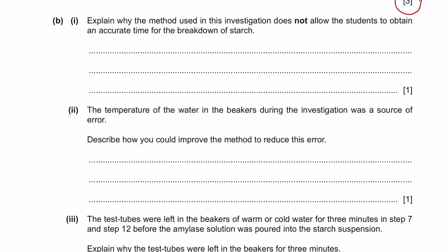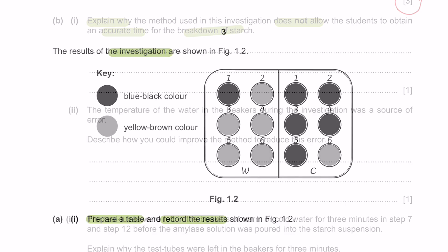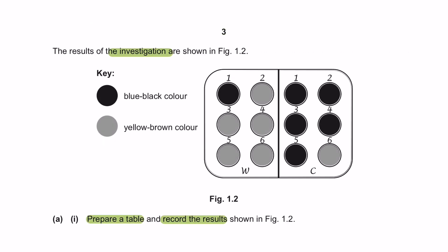Question B, Part 1, explain why the method used in this investigation does not allow the students to obtain an accurate time for the breakdown of starch. So we can tell that the starch has completely broken down when the color changes from blue-black to yellow-brown. And this happens in 30-second intervals.